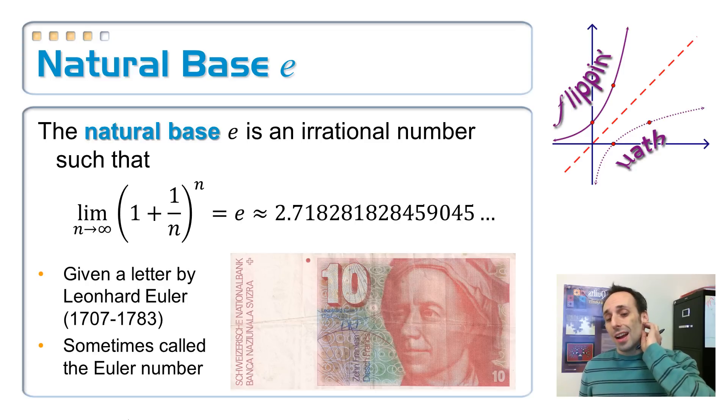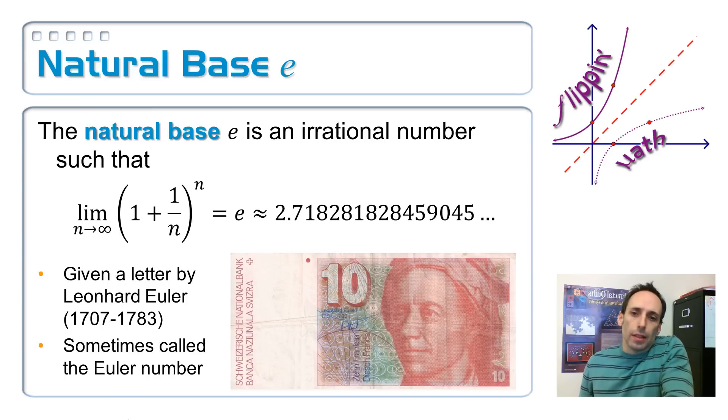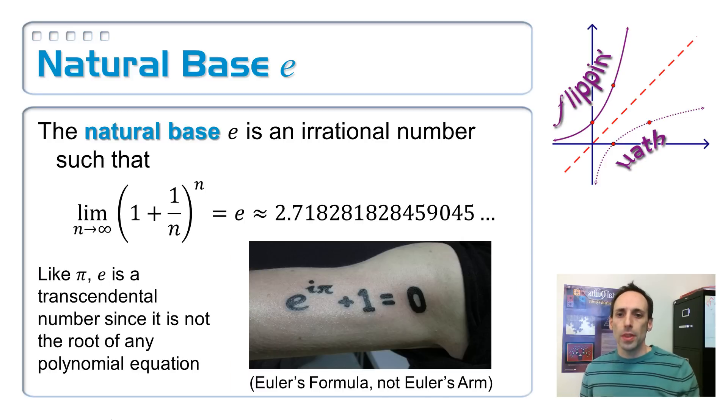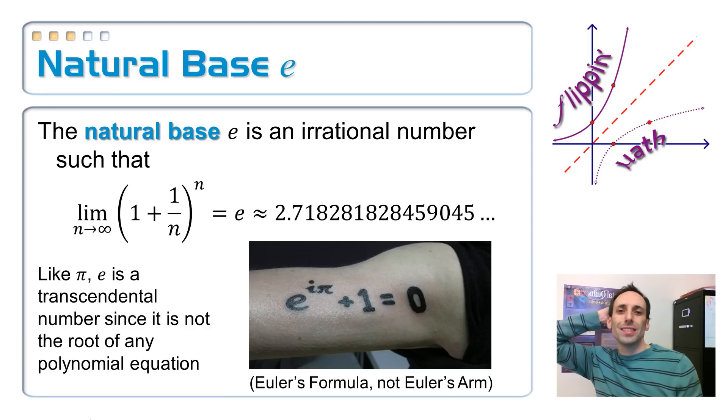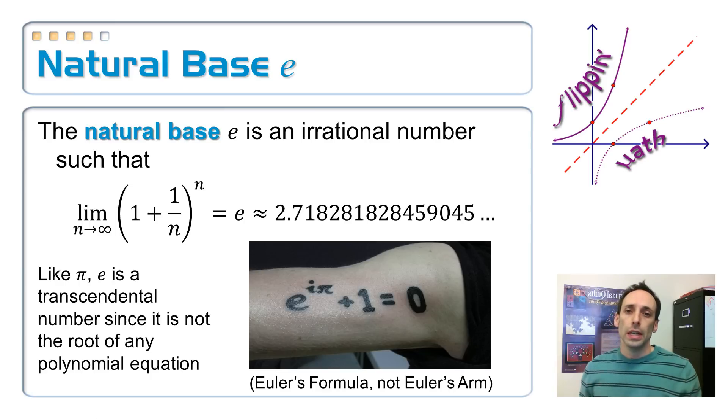So I don't know if this was a little bit of conceit on his part, but the guy who gave it the name, not necessarily the guy who discovered it, but the guy who gave it his name is Euler. Perhaps you've heard that guy's name before. Also called the Euler number. And this is such a special number, like pi, it's a transcendental number. And what that means is that there's no polynomial equation that you can solve in order to get E, just like you can't do that for pi.